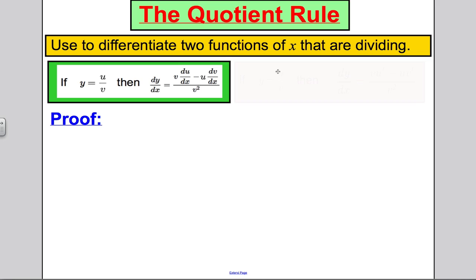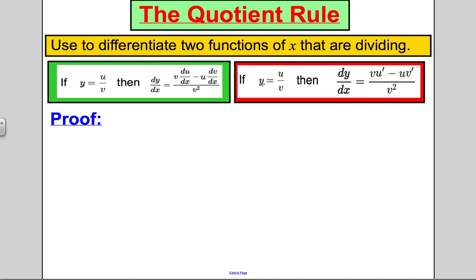So, maybe slightly simpler notation that I tend to use in the questions, I say that if y is u over v, u divided by v, two functions of x, then dy by dx is v u dash minus u v dash, all over v squared. And I'm going to just take a moment to prove it for you because it's a nice application of the Chain Rule.